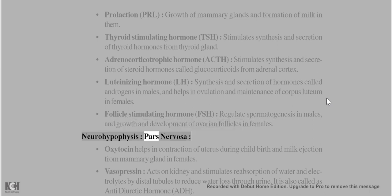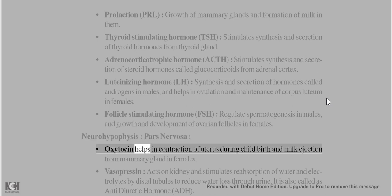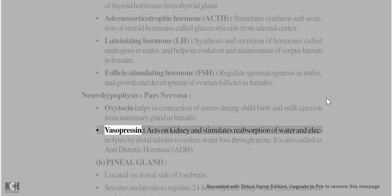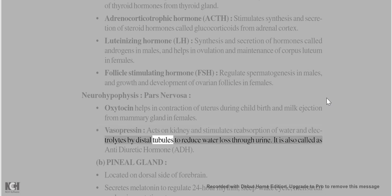Neurohypophysis (Pars nervosa): Oxytocin – helps in contraction of uterus during childbirth and milk ejection from mammary glands in females. Vasopressin – acts on kidney and stimulates reabsorption of water and electrolytes by distal tubules to reduce water loss through urine; also called antidiuretic hormone (ADH).